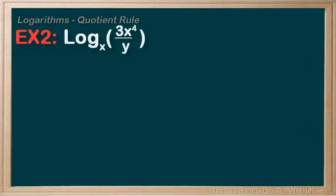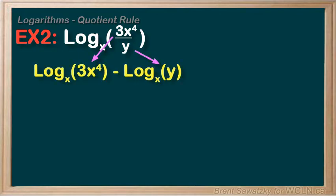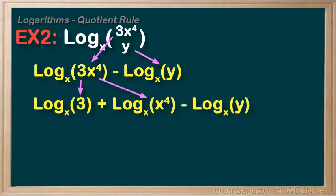Example 2, a more algebraic one: simplify log base x of 3x to the 4 over y. Let's break this up using a combination of our product rule and our new quotient rule. First: log base x of 3x to the 4 minus log base x of y — that's the quotient rule, division to subtraction. Then let's break up that first term: log base x of 3 plus log base x of x to the 4, minus log base x of y — that's the product rule, multiplication to addition.